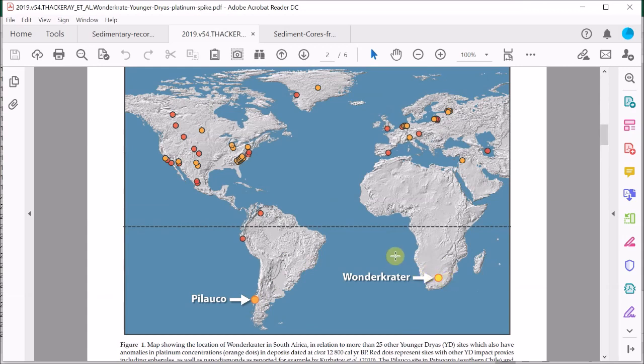So what evidence do Thackeray and colleagues have for the Younger Dryas impact in South Africa? Well, essentially they report on the discovery of a platinum abundance found in the sediment at an archaeological site known as Wonderkrater.